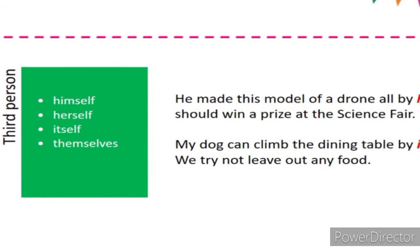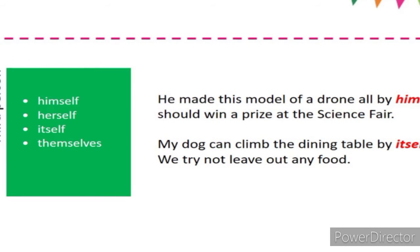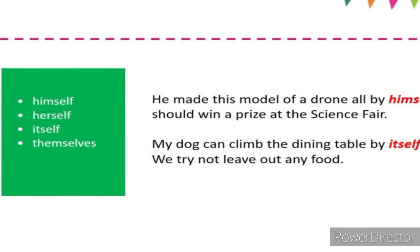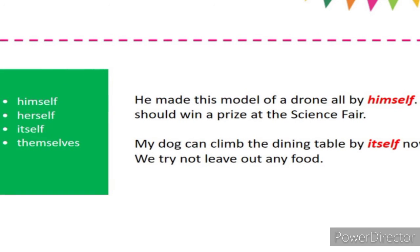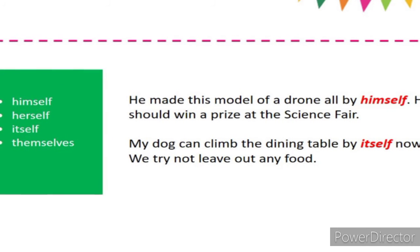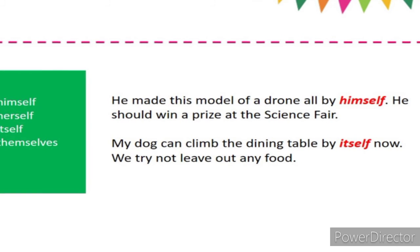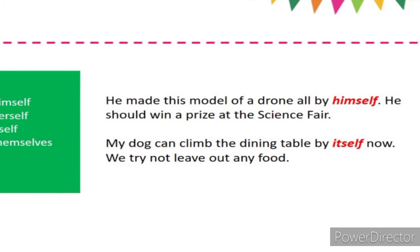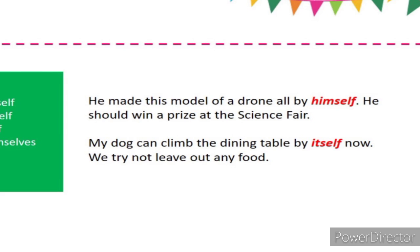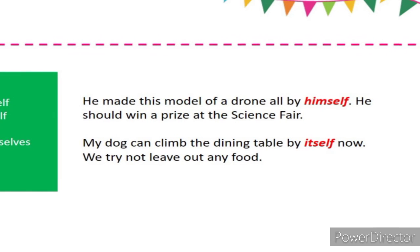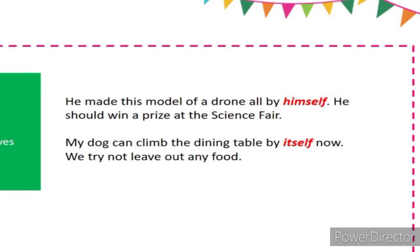Now the third person category. The personal pronouns are 'he', 'she', and 'it', and the reflexive pronouns are 'himself', 'herself', and 'itself'. Now, when the plural is there, the personal pronoun is 'they' and the reflexive pronoun is 'themself'.